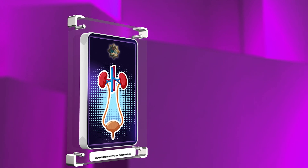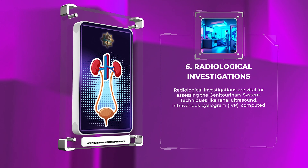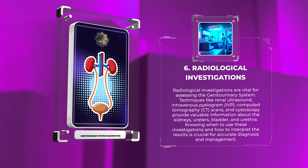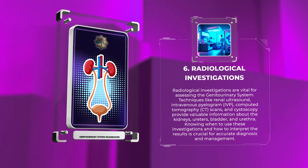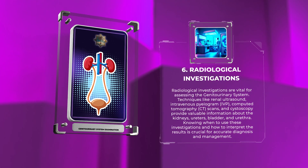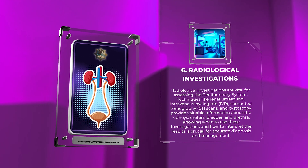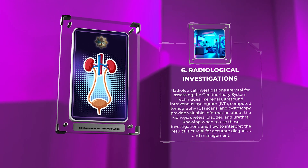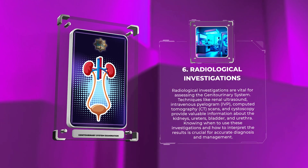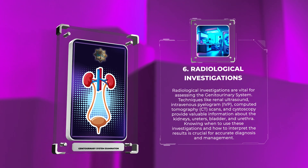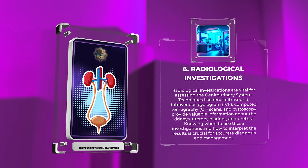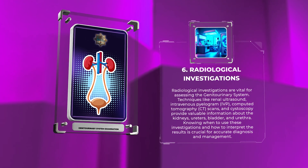Radiological investigations are vital for assessing the genitourinary system. Techniques like renal ultrasound, intravenous pyelogram (IVP), computed tomography (CT) scans, and cystoscopy provide valuable information about the kidneys, ureters, bladder, and urethra. Knowing when to use these investigations and how to interpret the results is crucial for accurate diagnosis and management.